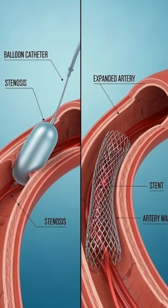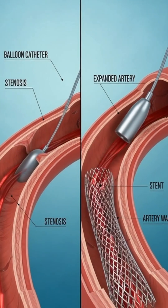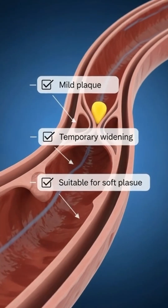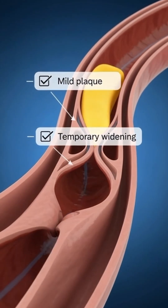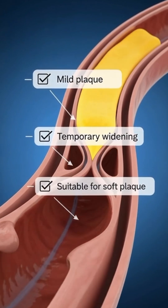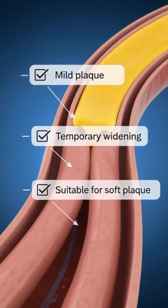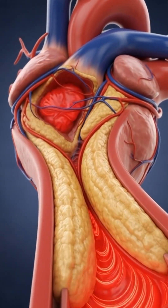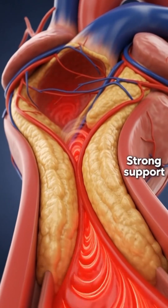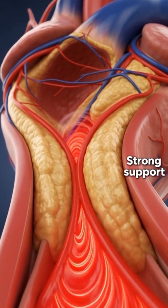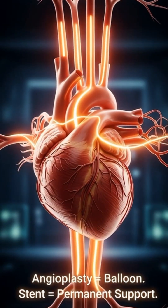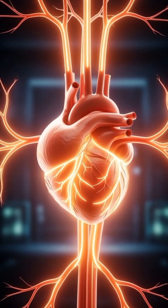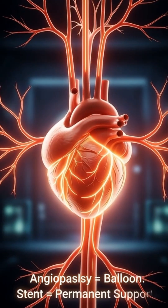Left side: angioplasty only. Right side: stent left inside the artery. Angioplasty is used when the plaque is soft and the narrowing is less severe. A stent is used when the artery is critically blocked or likely to close again. Angioplasty opens the artery with a balloon; a stent stays inside to keep it open long term.